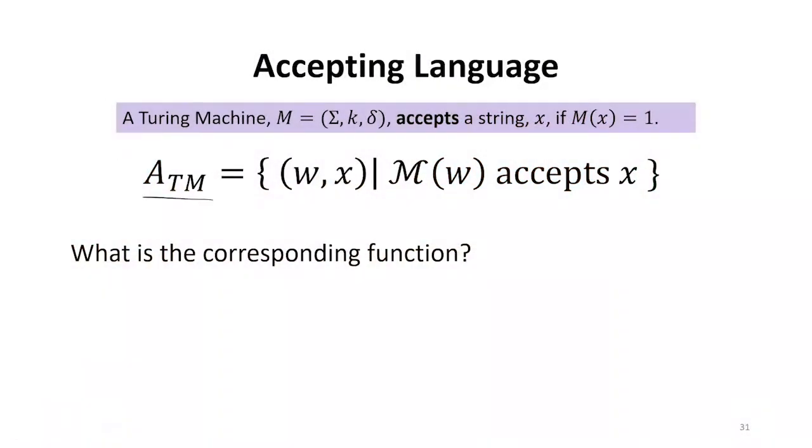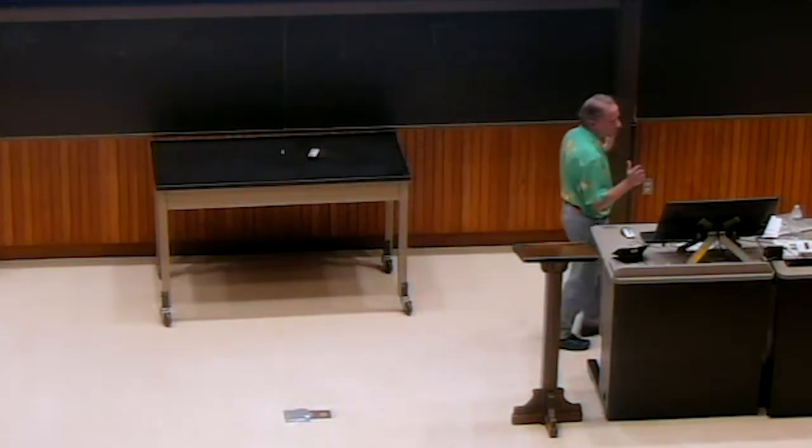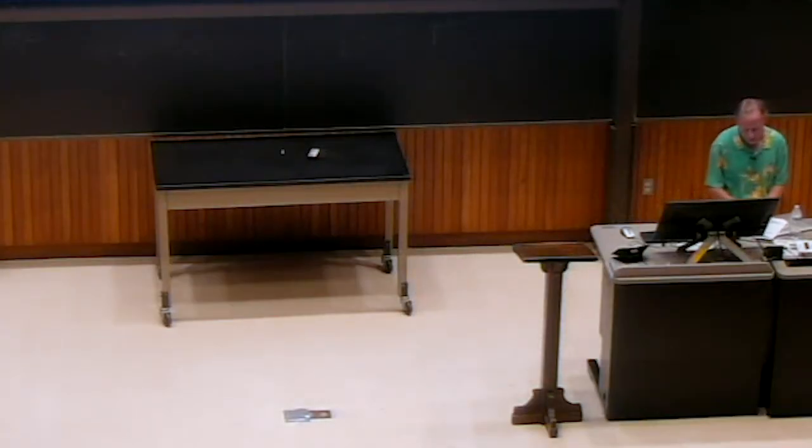We're going to define the language accepts as the set of pairs of strings where the first string is a description of a machine, and the second string is an input string to that machine, and it includes the strings that would be accepted. The string mx is in the set if the machine described by w would accept the string x. Accepts here just means we run the machine and it outputs a 1. It runs to completion, it gets to a halt, and what's on the tape at the end with our input determining function is a 1.